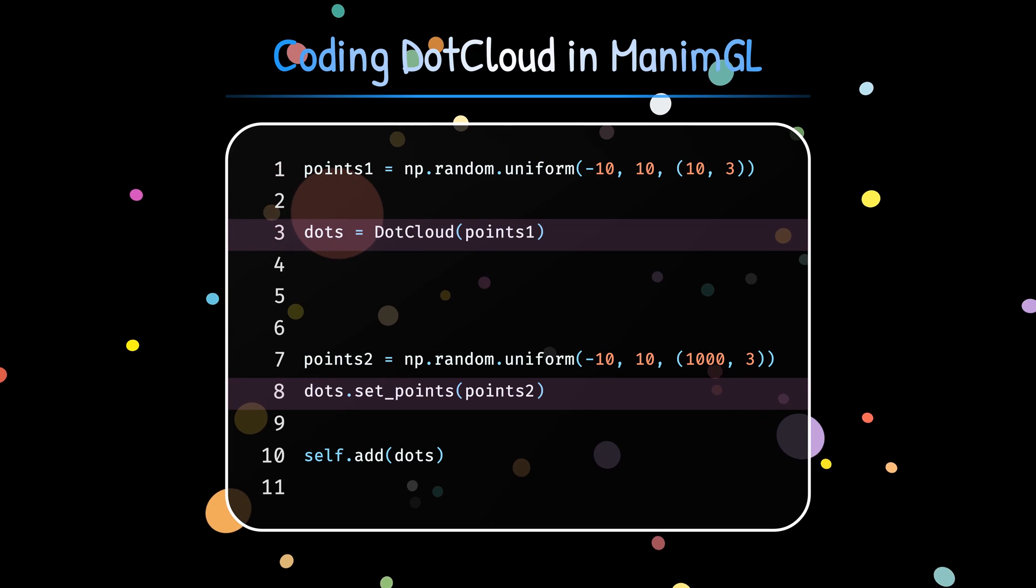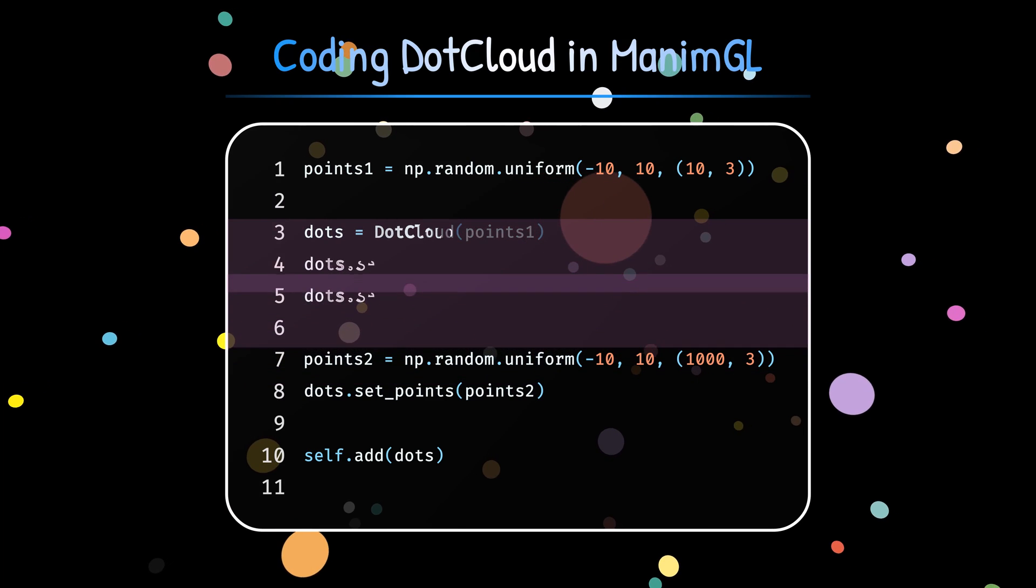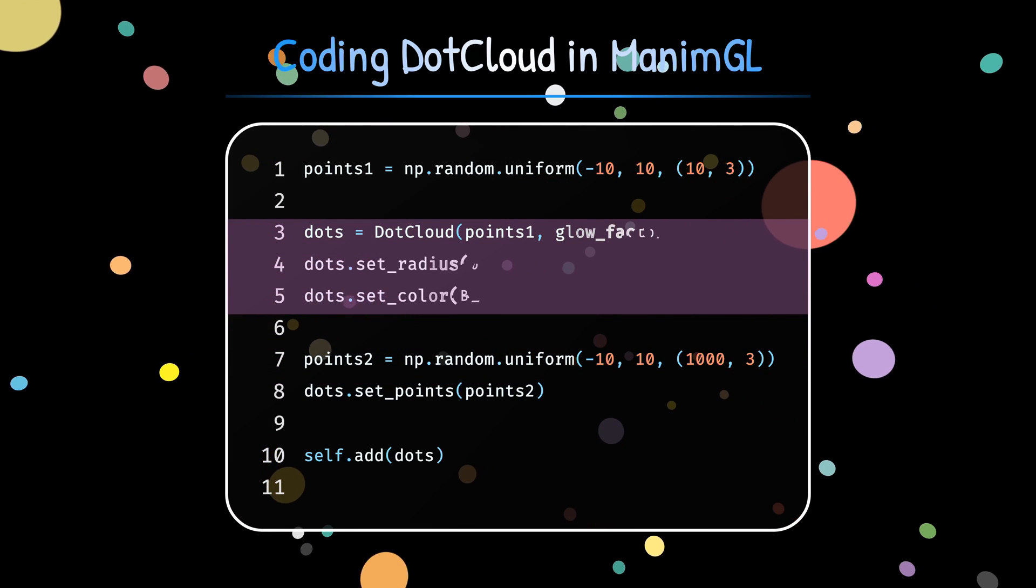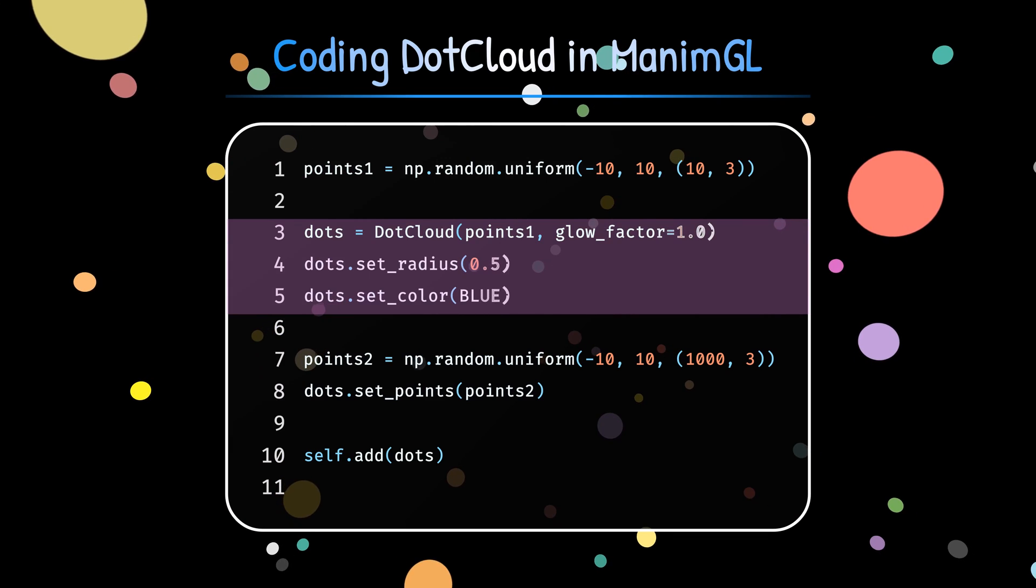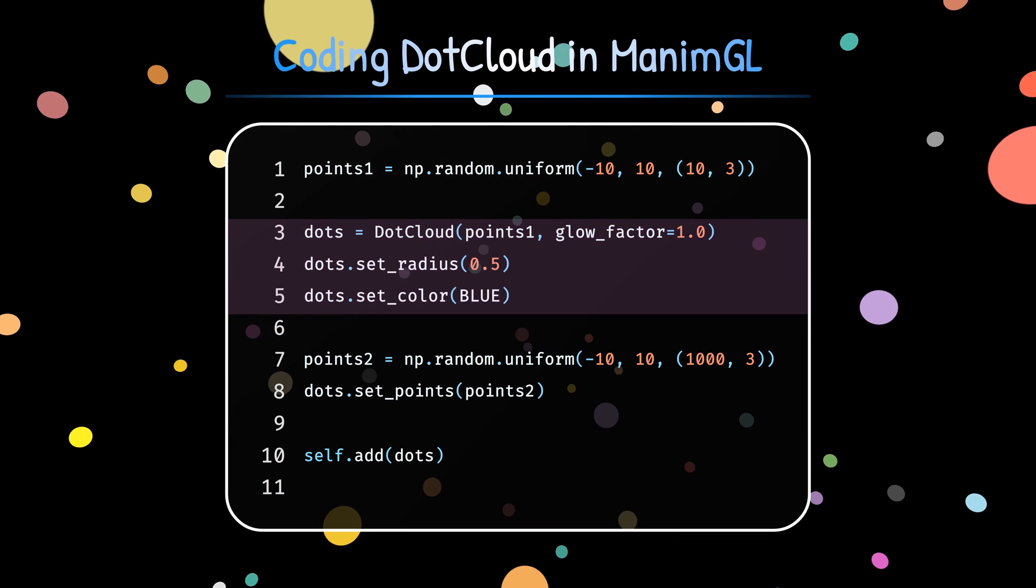No matter how many particles we are working with, .cloud instantly projects the coordinates onto the Manim canvas. And beyond that, we can easily customize the appearance of particles by adjusting their colors, radius, or opacity. And even we can set a gradient of colors.